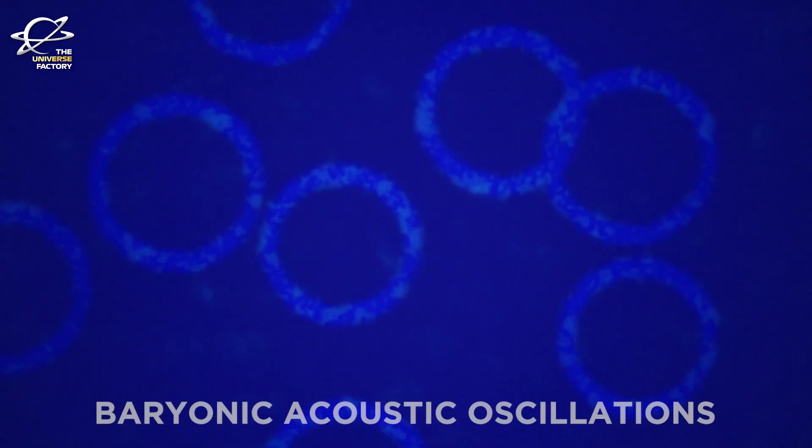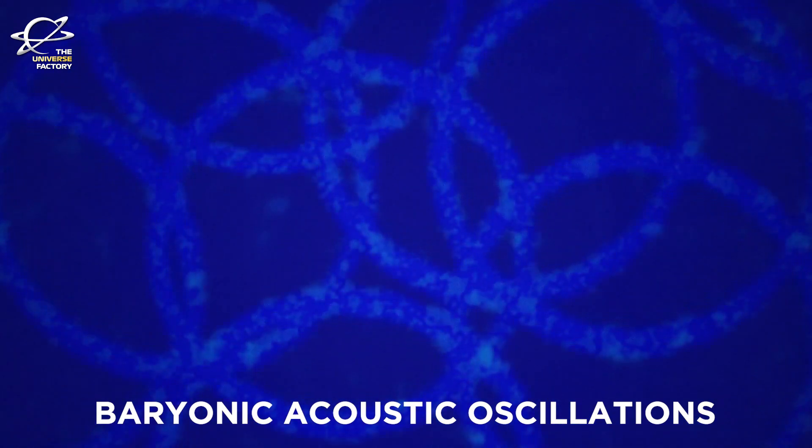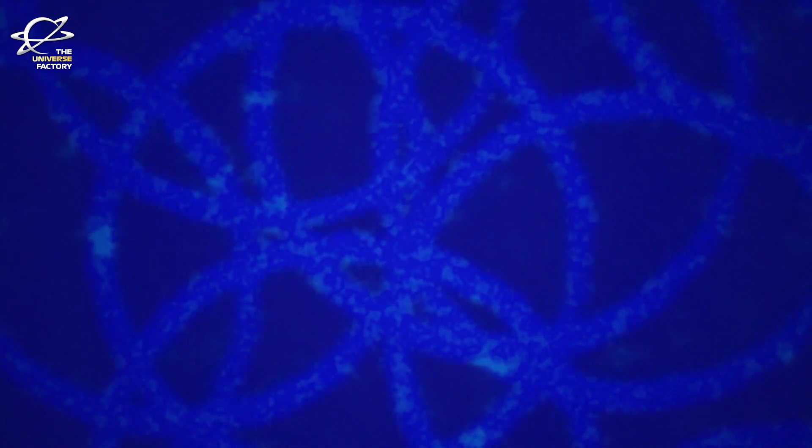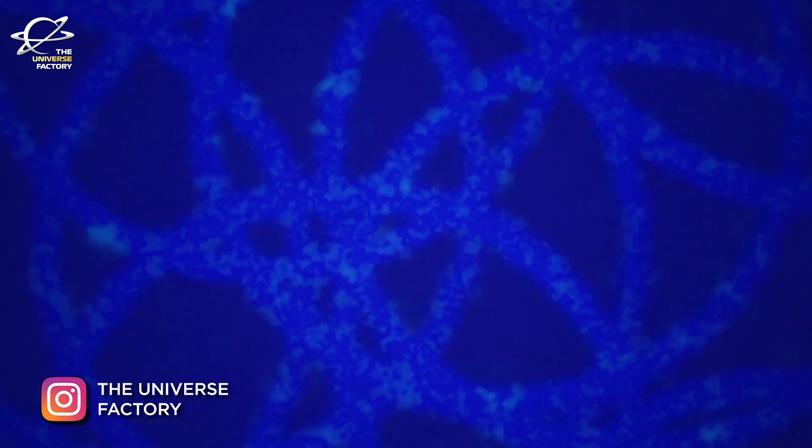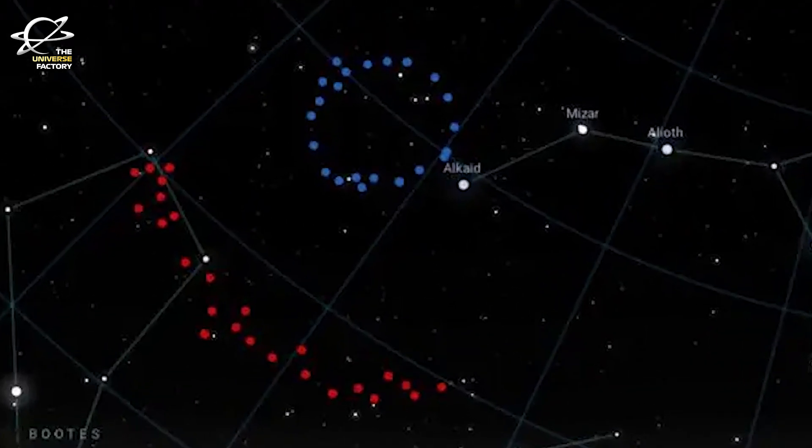According to her, one possible explanation is that the Big Ring could be related to baryonic acoustic oscillations or BAOs. These BAOs are acoustic waves from the early universe and statistically they should appear as spherical shells in the arrangement of galaxies. But the issue with this explanation is that the Big Ring is too large and is not spherical.